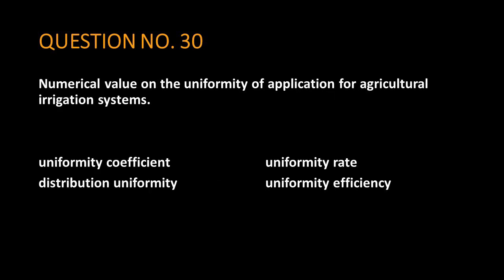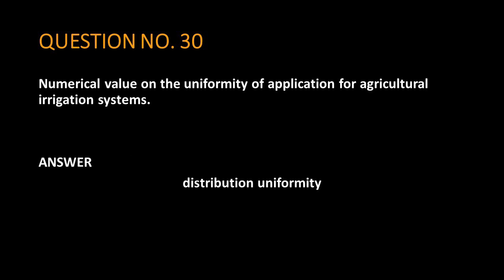Question No. 30. Numerical value on the uniformity of application for agricultural irrigation systems. The answer is: distribution uniformity.